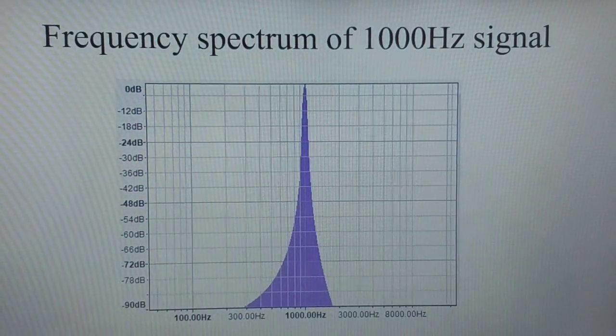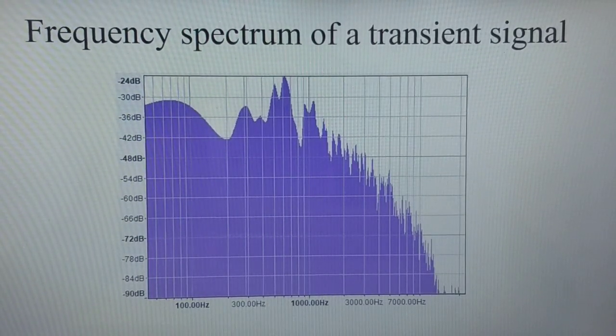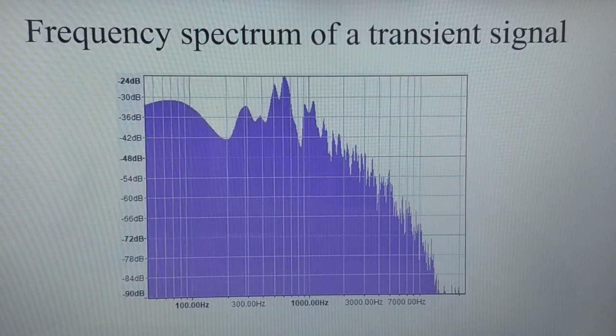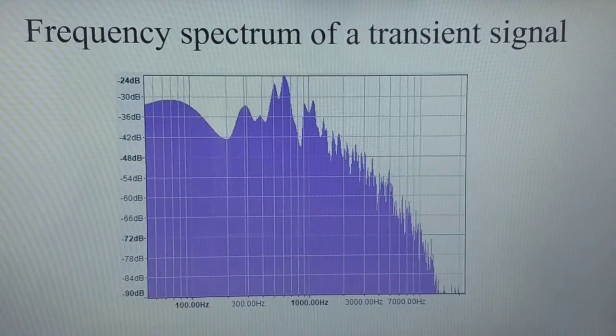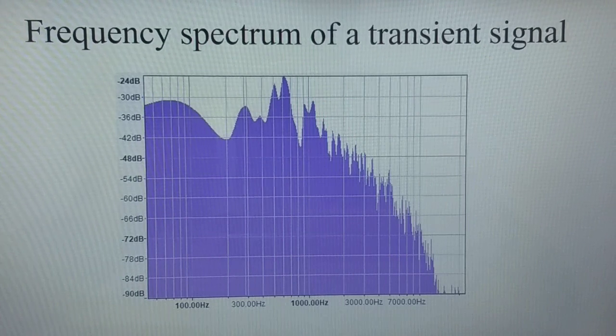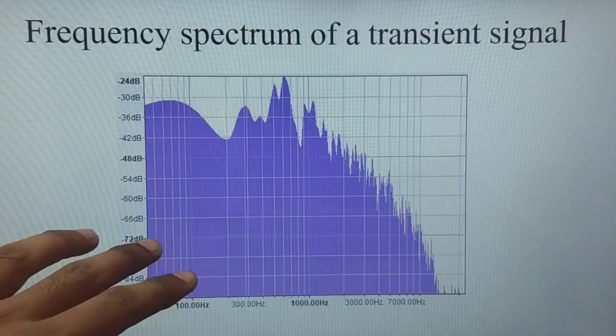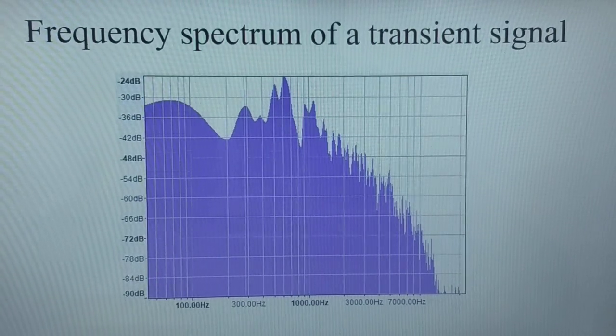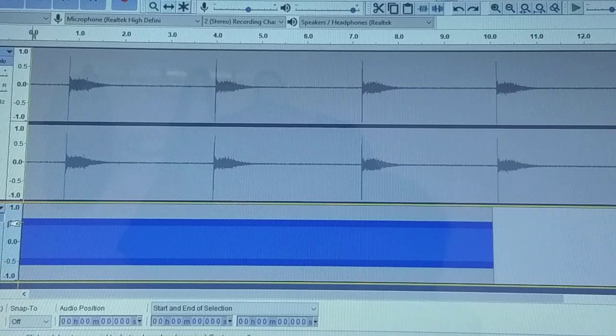Now let's look at the frequency spectrum of a transient signal. So this is how the frequency spectrum looks like. Actually it's a box snap, which is indeed a transient signal. So it's a wide band event. So it involves a wide spread of frequencies. And hence transient signals are called as infinite sum of frequencies.